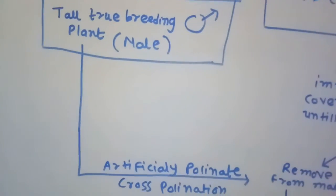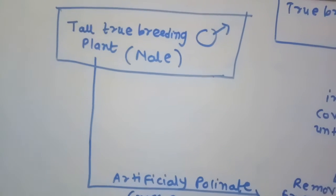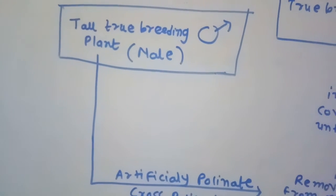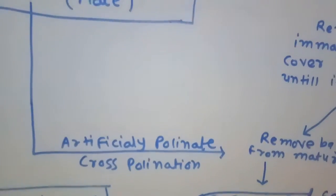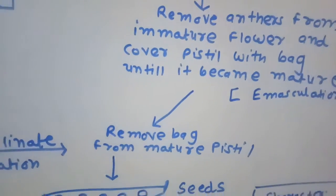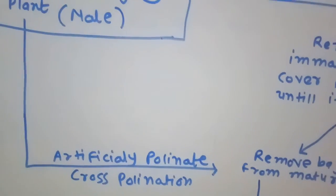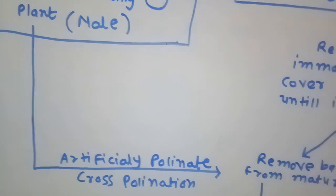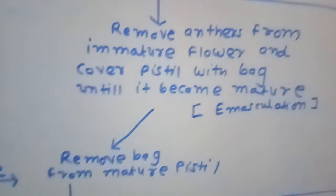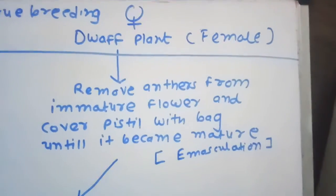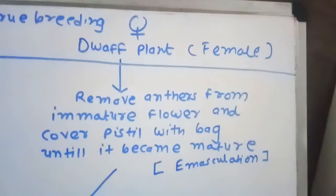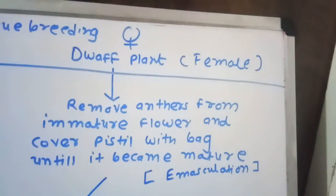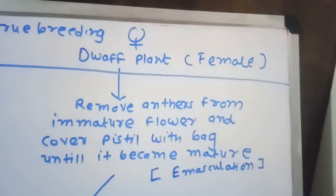He then took pollen grains from the tall plant, which was considered the male plant, and artificially pollinated the dwarf plant's pistil using the pollen of the tall plant. By this emasculation method, he was able to prevent self-pollination in the dwarf pea plant and successfully perform cross-pollination.